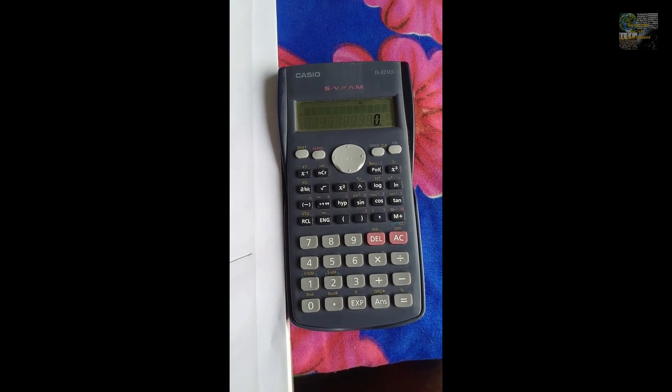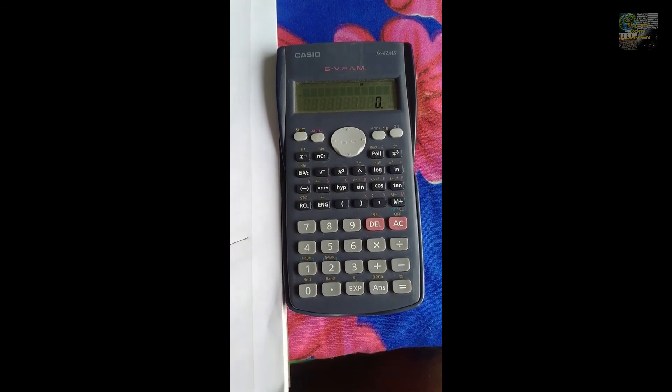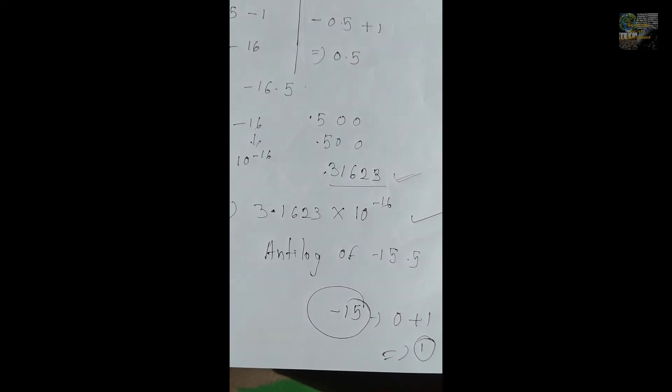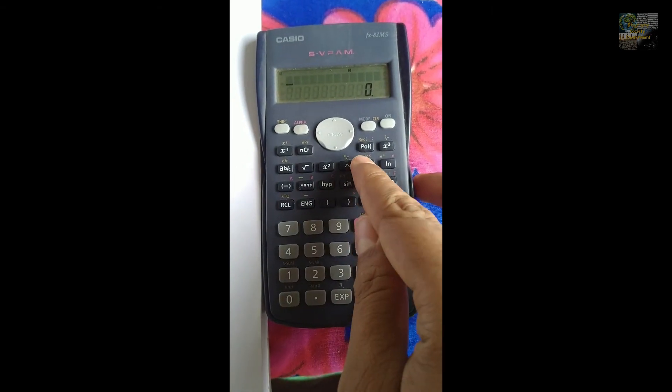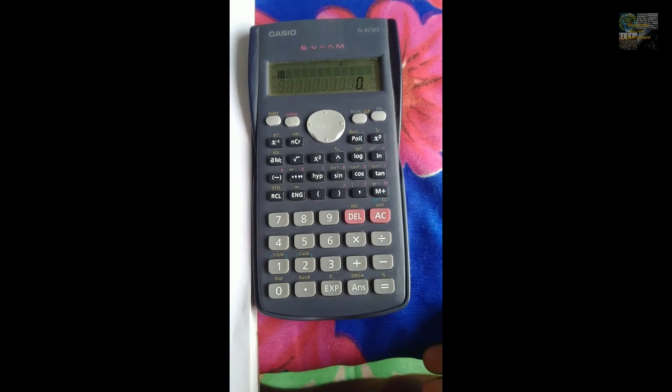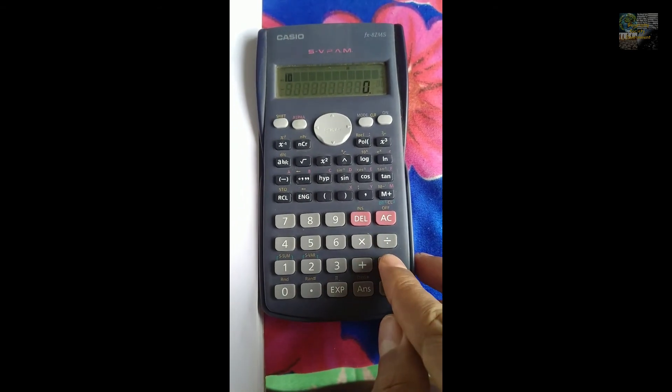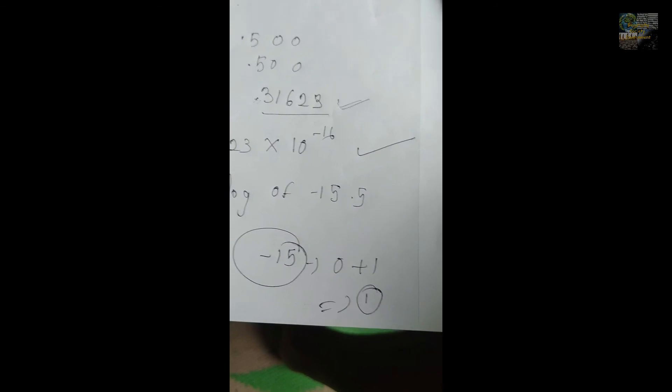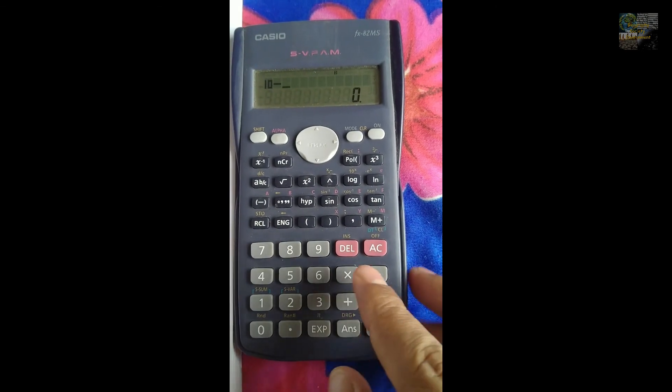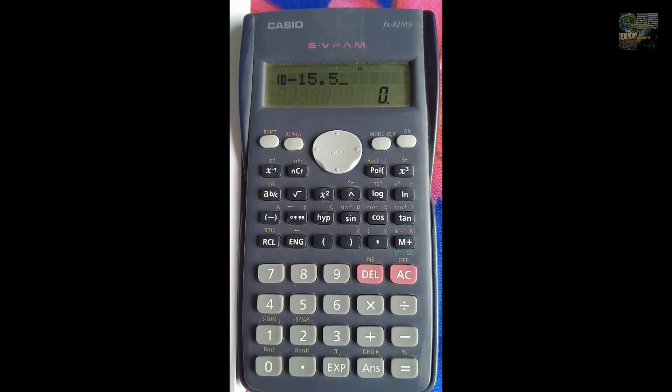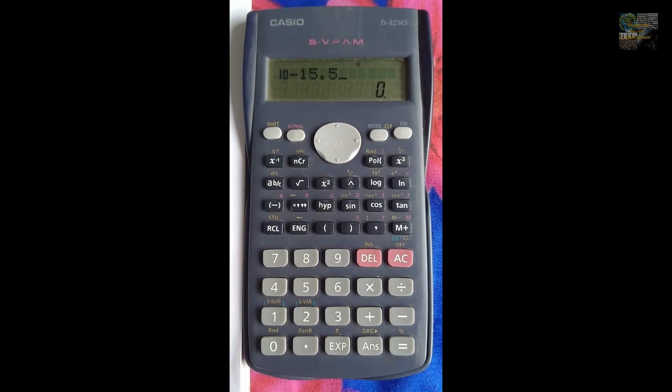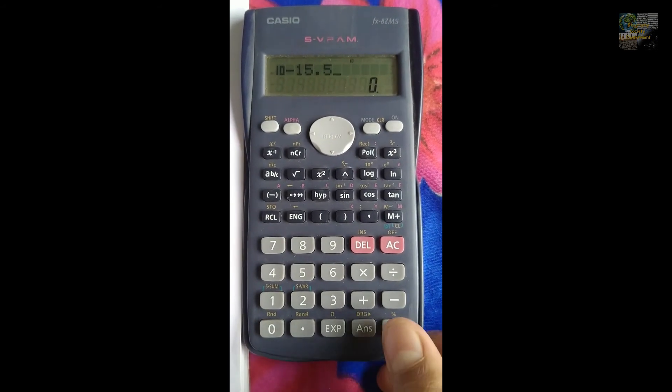Now, I am going to use the scientific calculator to recheck and rectify whether it is correct or not. Turn on the scientific calculator and you need to type shift log to open the antilog function. Then type the question: minus 15.5. You can see that I have typed the antilog of minus 15.5. Then press equals.